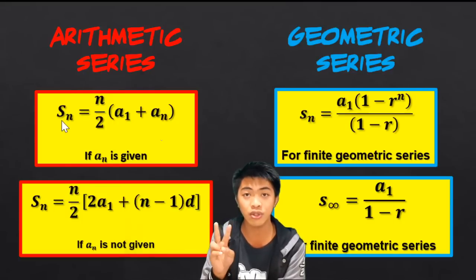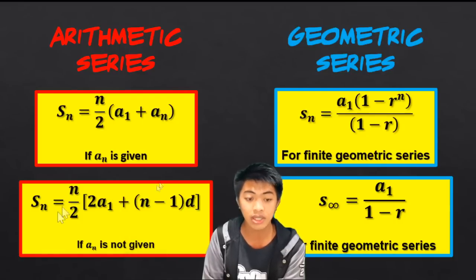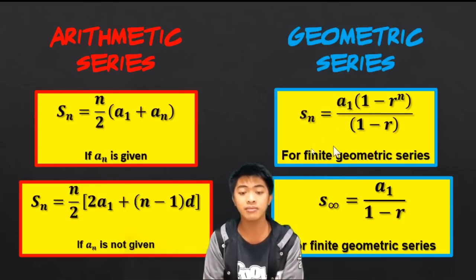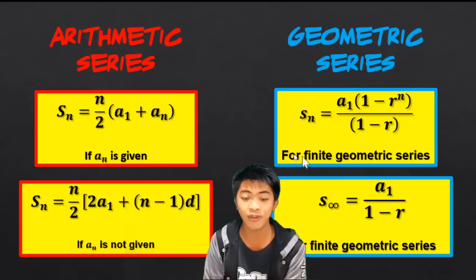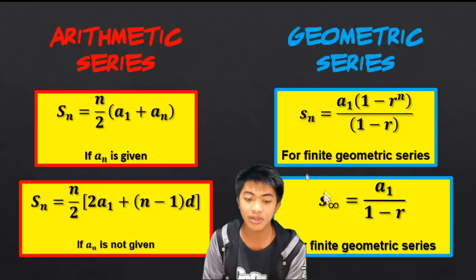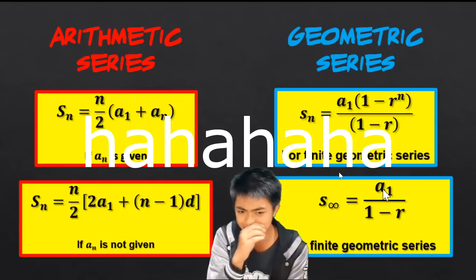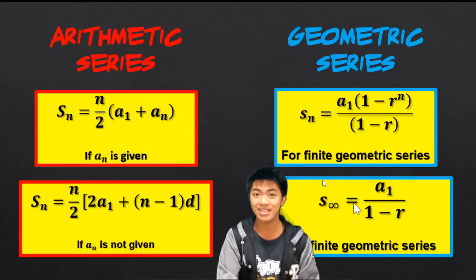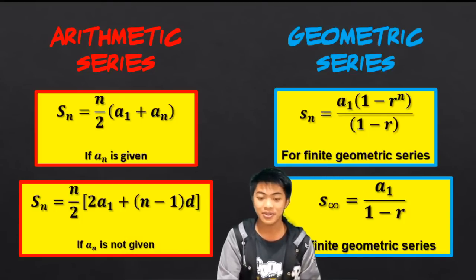For arithmetic series, there are two formulas. We use the first formula if the last term of the sequence is given. We use the second formula if the last term is not given. For the geometric series, we also have two formulas. The first formula is for finite geometric series. The second formula, which has the infinity symbol, is for infinite geometric series. This infinite geometric series formula can only be used if the common ratio is a proper fraction.